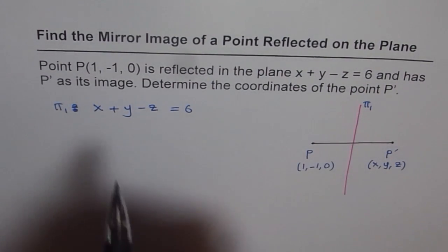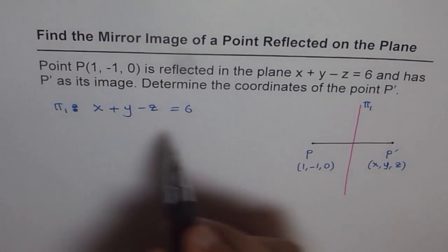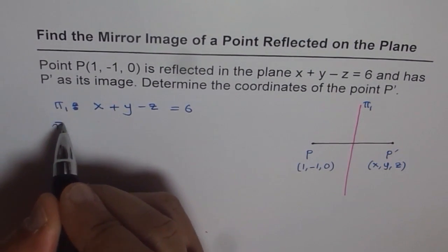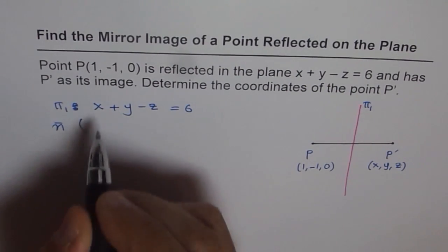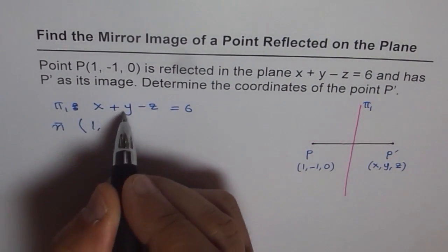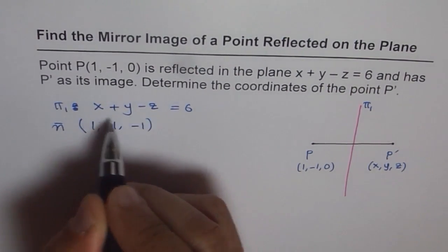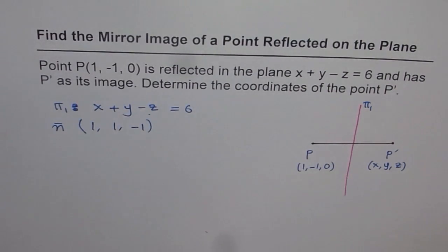If the plane is given to us, then we also know its normal. The normal to the plane is basically (1, 1, -1) — the coefficients of x, y, and z, since this equation is in scalar form.